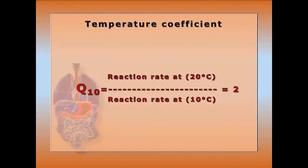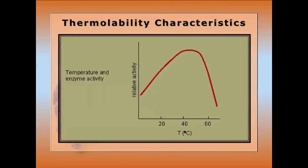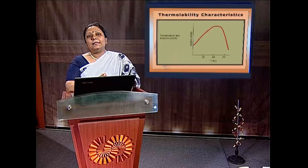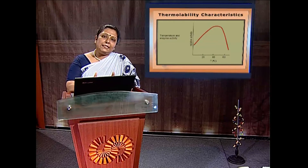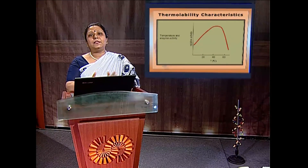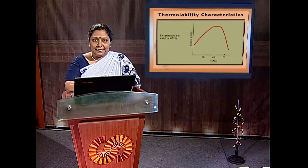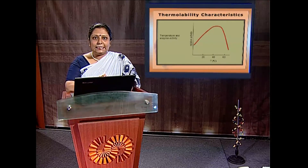The temperature coefficient Q10 is the ratio of enzymatic activity per 10°C temperature increase; it may be 2x or 3x and depends on activation energy, but cannot increase further at very high temperatures. Not all enzymes are thermolabile — thermophilic bacteria have a temperature optima of around 85°C, while most enzymes are limited to 37°C.